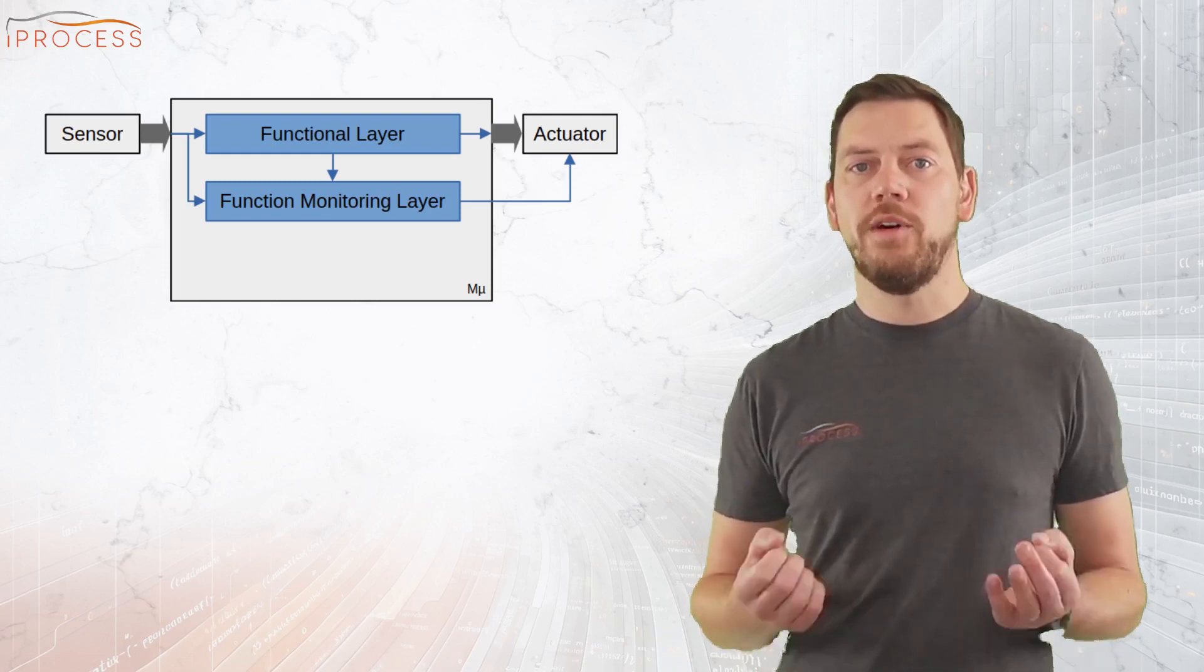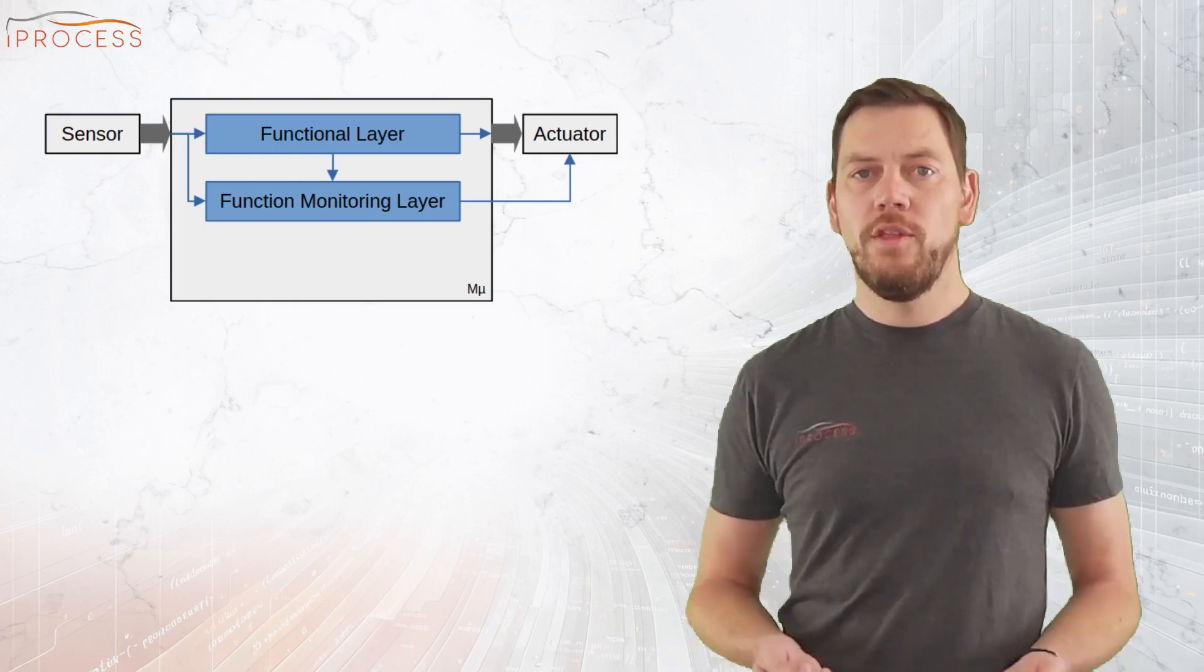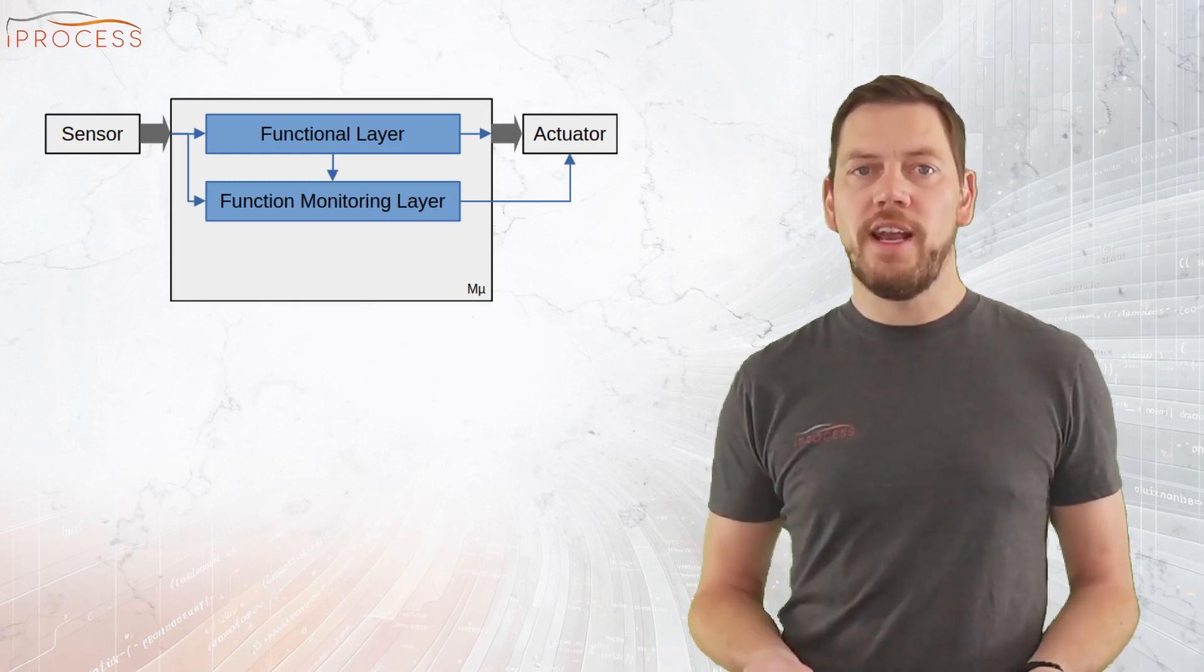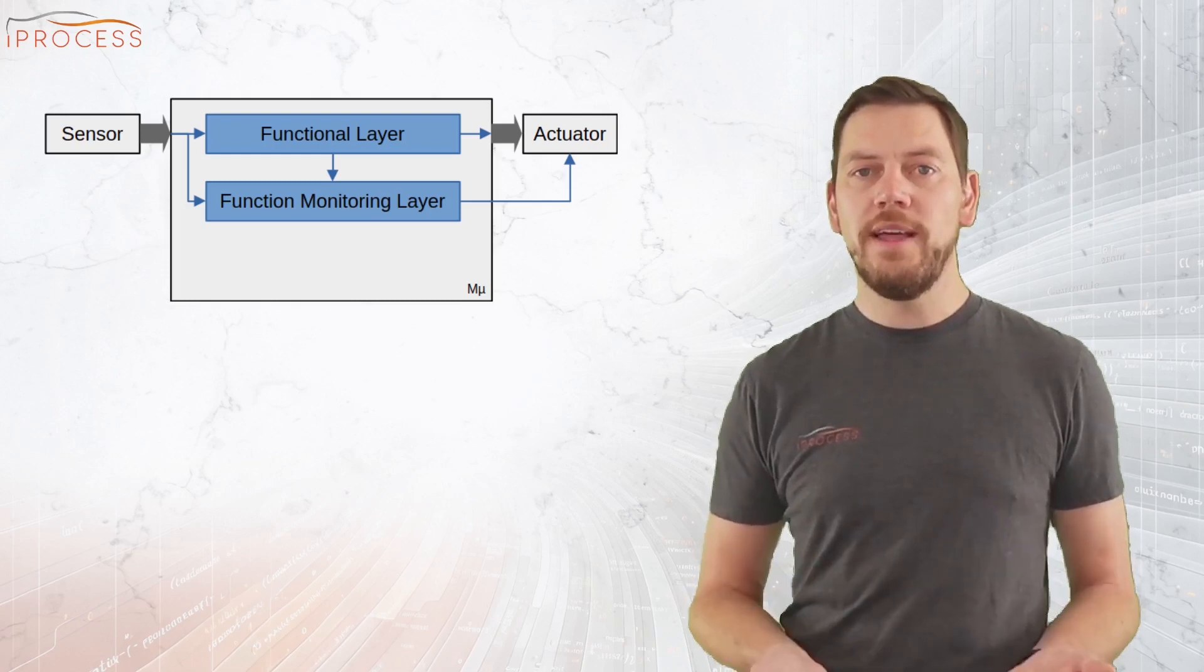This layer is responsible for the detection of arithmetic mistakes or program flow issues in layer 1. Three, the controller supervision layer. Layer 3 does the controller monitoring and it is split into two parts.